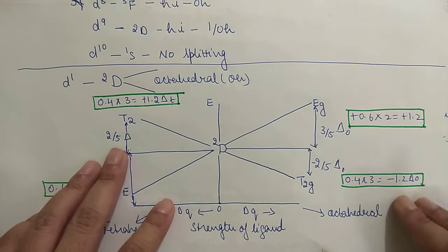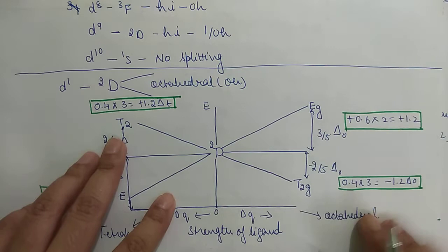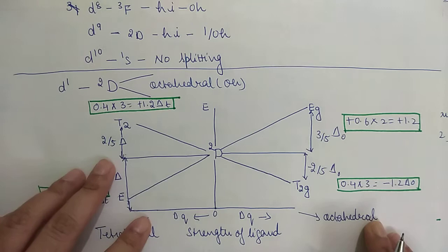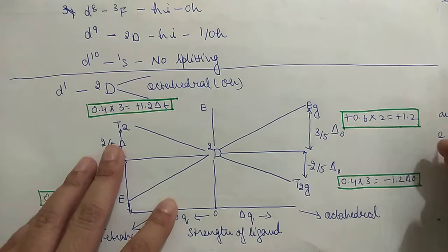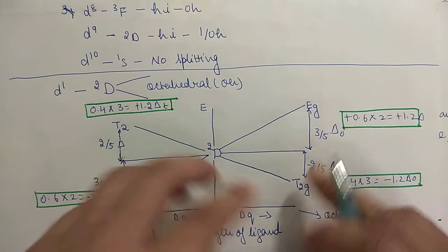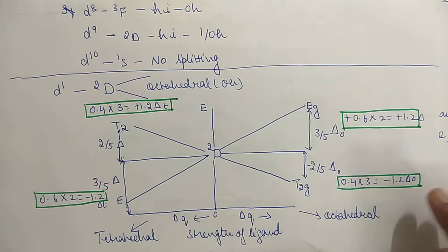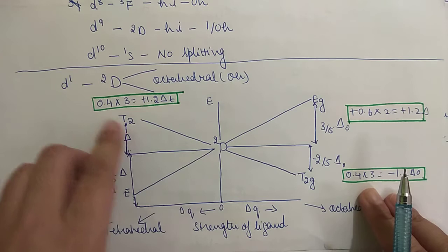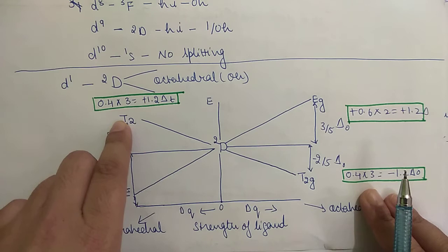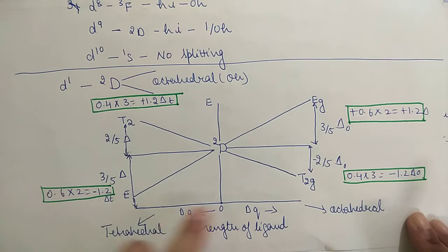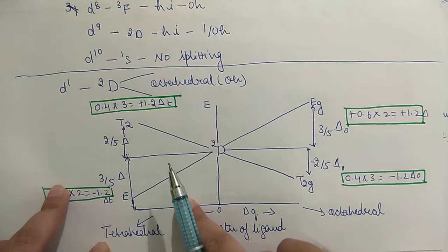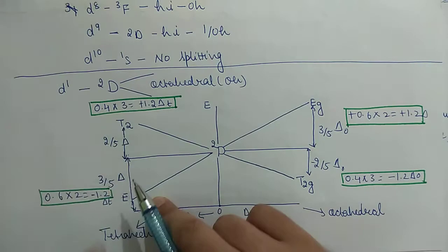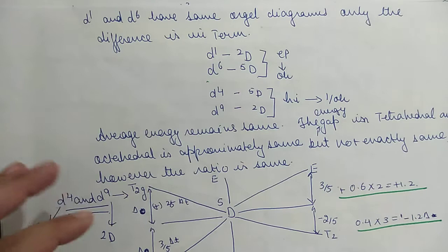Since octahedral is centrosymmetric, we write 'g' subscripts: eg and t2g. The increase in energy is 0.6 × 2 = 1.2Δ, and the decrease is 0.4 × 3 = 1.2Δ. On the tetrahedral side, since it is not centrosymmetric, we omit the 'g' subscript. Tetrahedral splitting is opposite to octahedral: t2 increases in energy by 2/5Δ and e decreases by 3/5Δ. The increase in energy equals the decrease in energy.